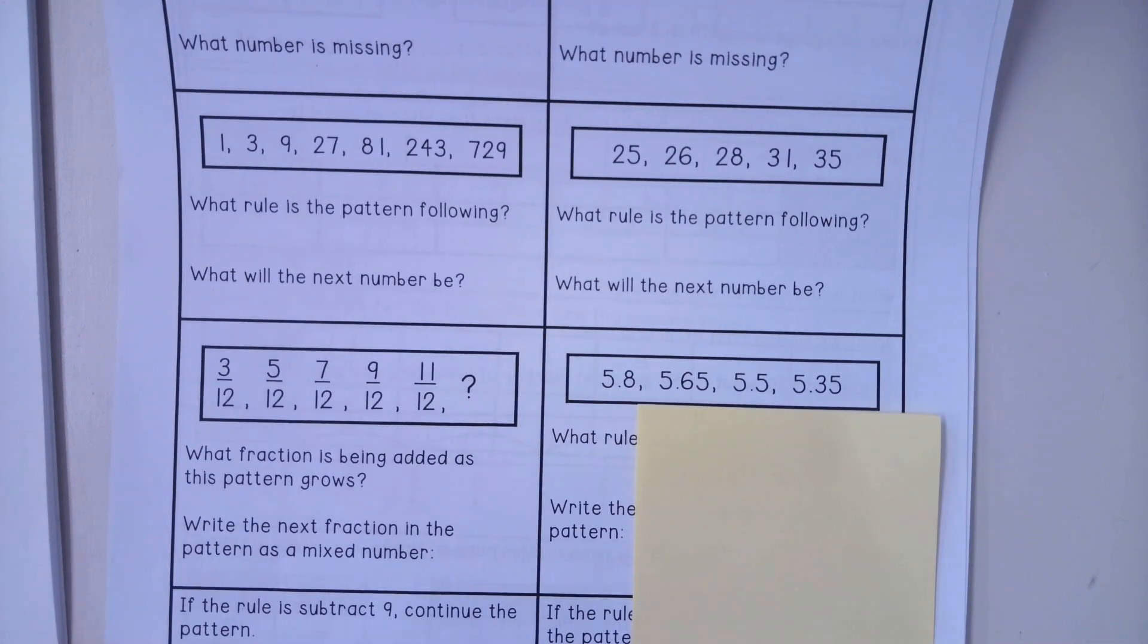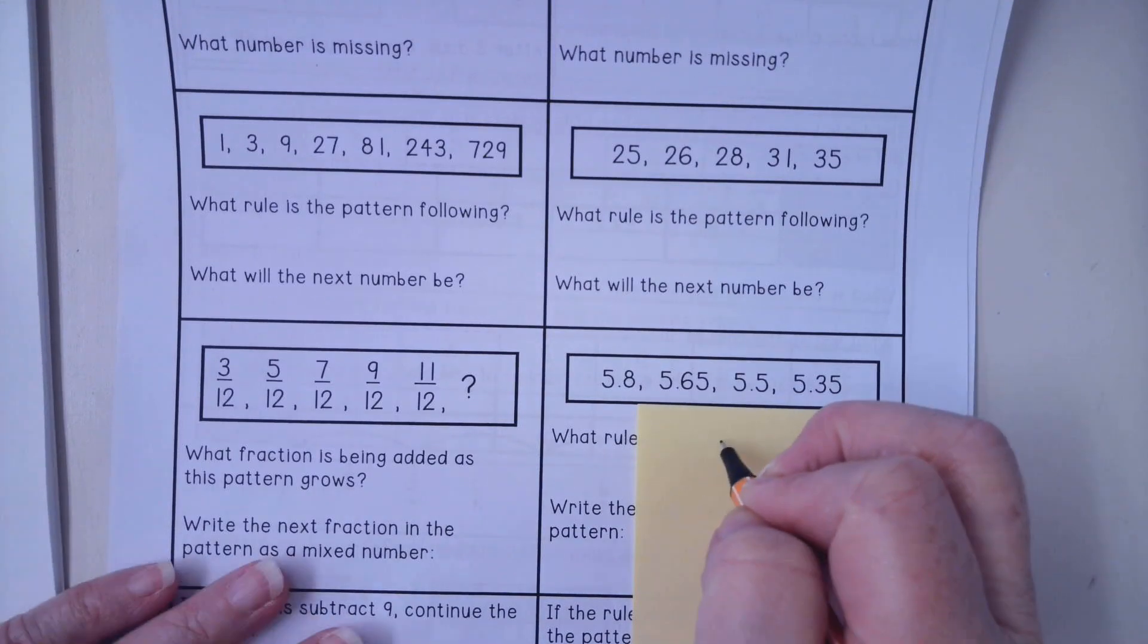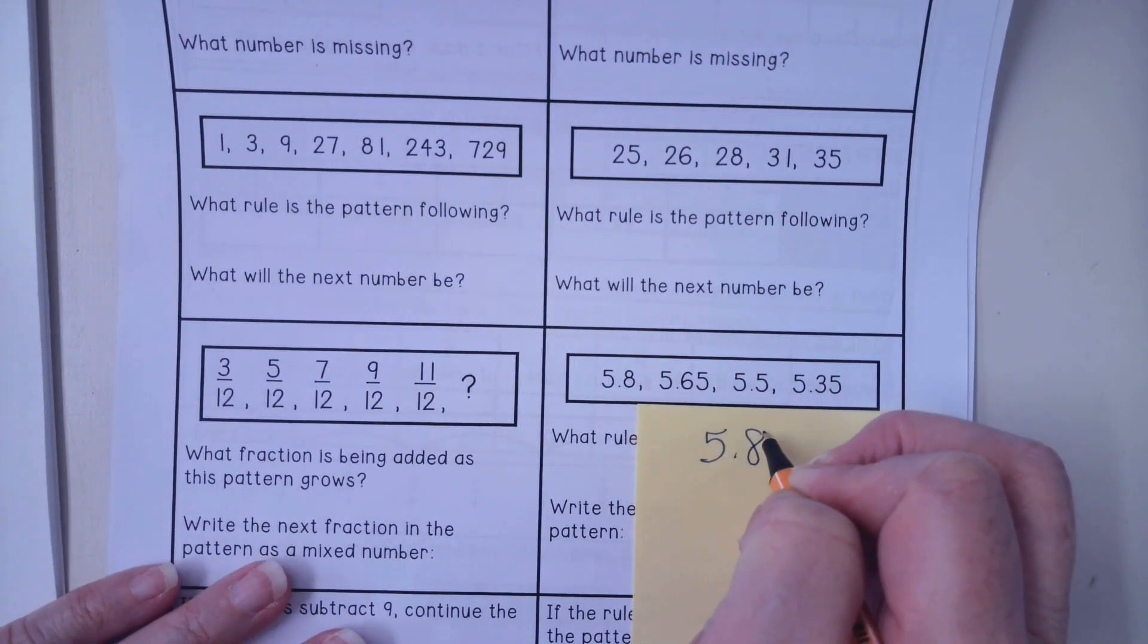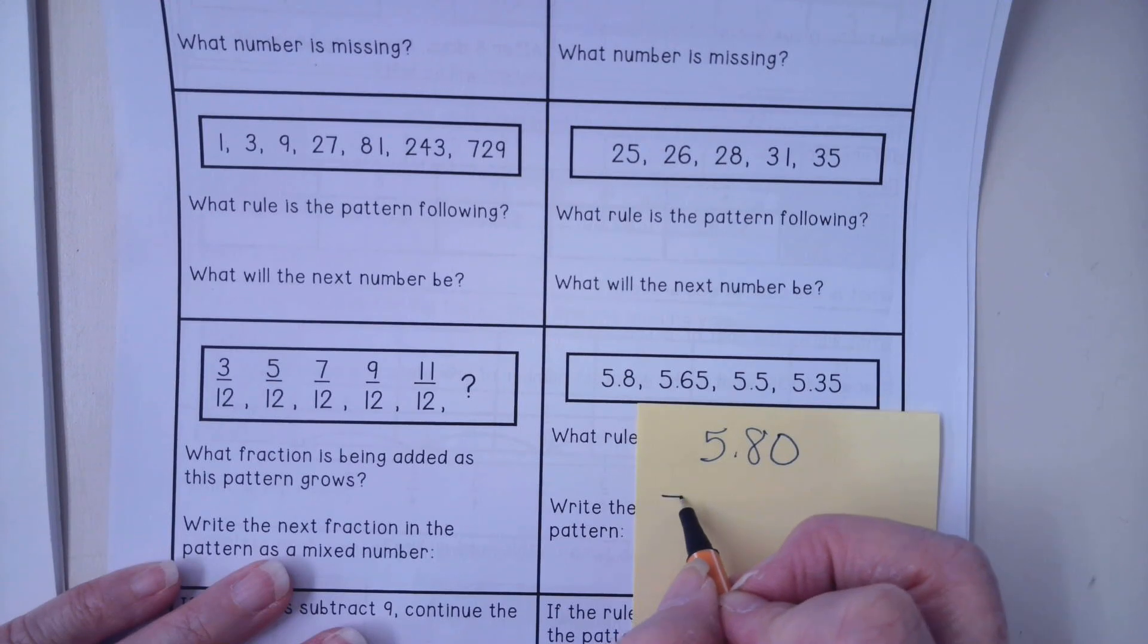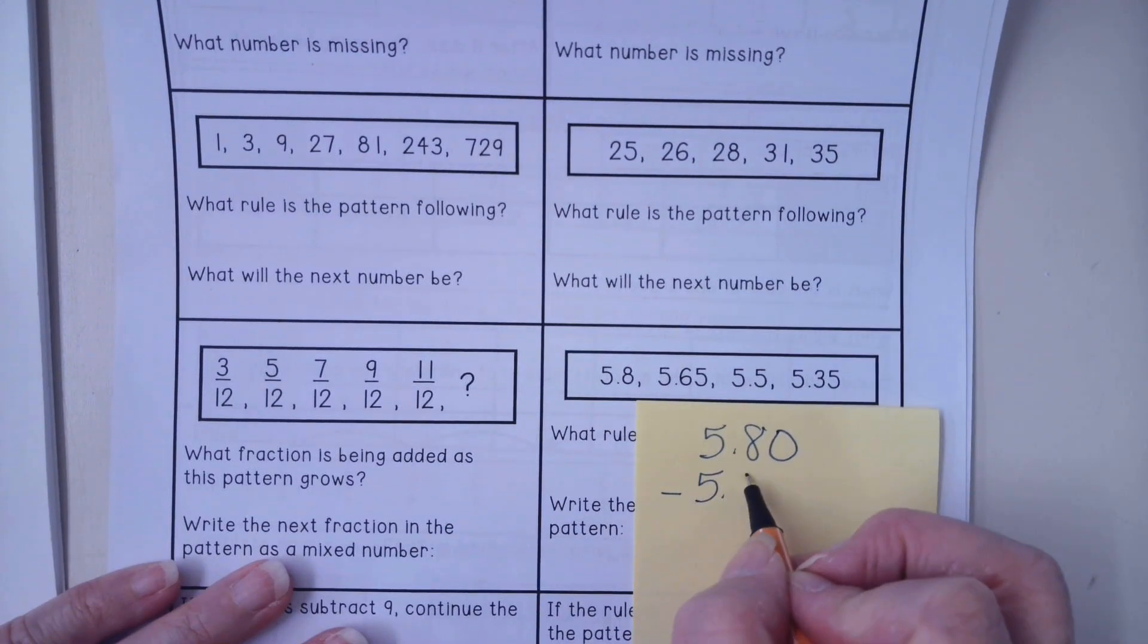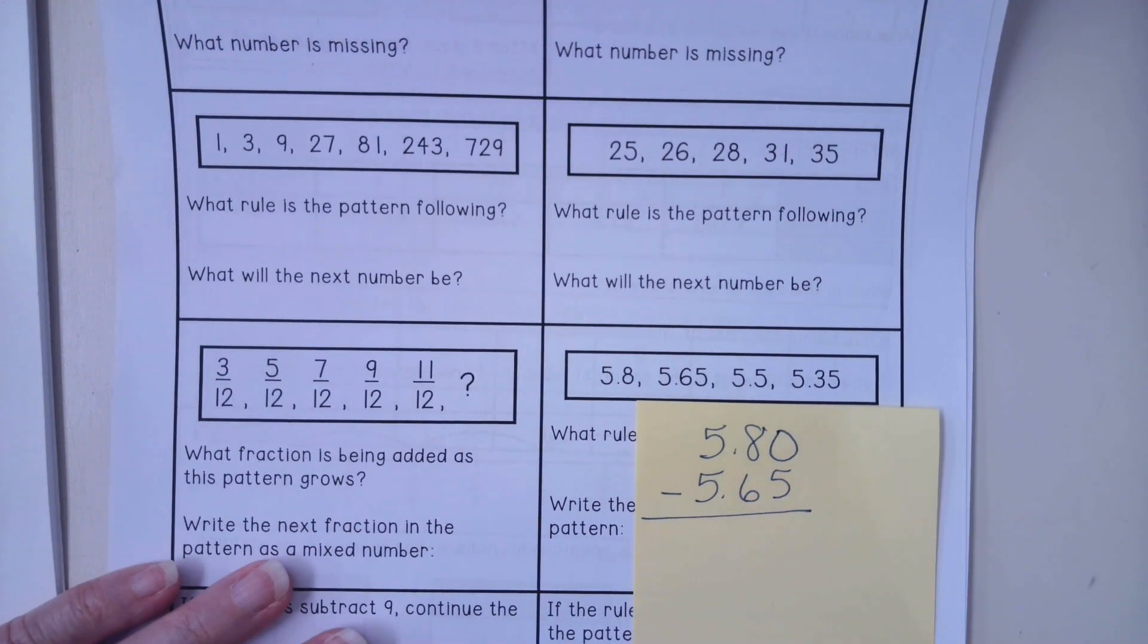So 5.8 to 5.6 is decreasing. So I am going to start by putting 5.8 and then I'm going to add an extra zero on the end because that is just a placeholder. And I am going to subtract 5.65 from my number.